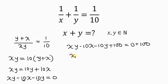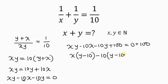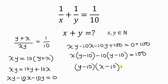Factoring: x is common, so we factor out x to get x(y minus 10). Then negative 10 is also common, giving negative 10(y minus 10). So the left side factors as (x minus 10)(y minus 10), and this equals 100.